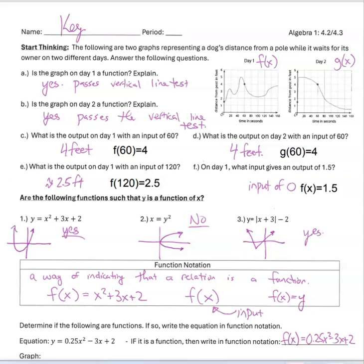The next one says: what is the output on day one with an input of 120? The input is the independent variable on the x-axis, and the y-axis is the dependent, which is the output. When we go to 120 seconds and go up, that is about 2.5. Lastly, it says: on day one, what input gives an output of 1.5? If you look at where 1.5 is, the only time that graph shows the dog at one and a half feet away is at time zero. So that would be an input of zero.